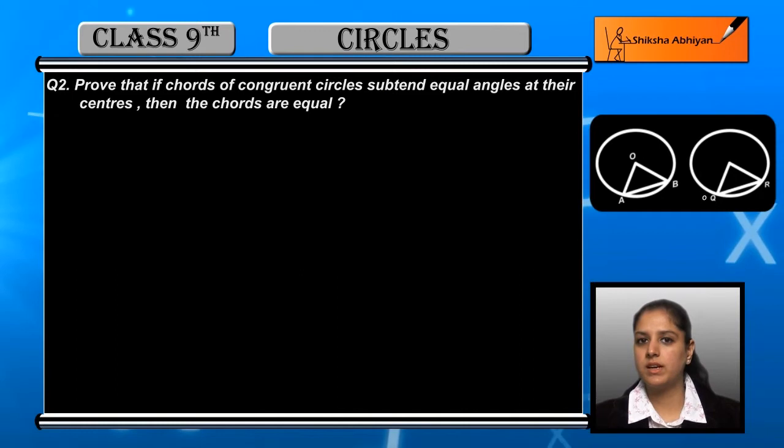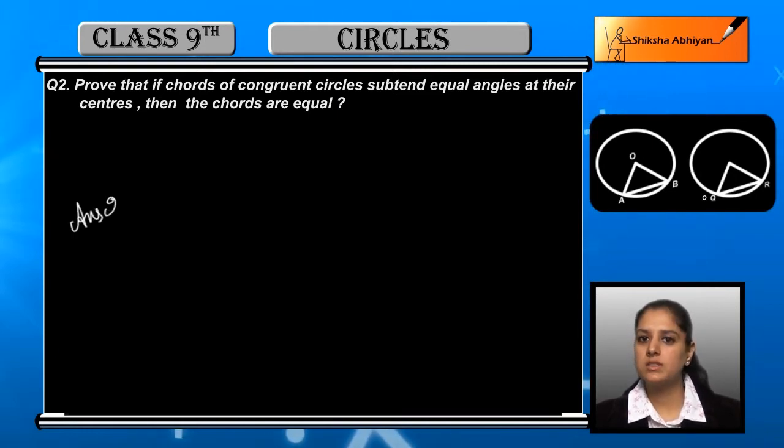Let us see how we proceed. In the same way, we will consider both triangles. So we have triangle OAB and the second triangle of the second circle PQR. We have considered both these two.